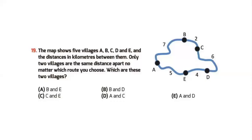Question 19: The map shows five villages A, B, C, D, E and the distances in kilometers between them. Only two villages are at the same distance apart no matter which route you choose. Which two villages are these? Let's look at the villages A, B, C, D, and E and the distances between them.